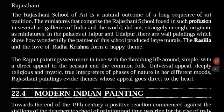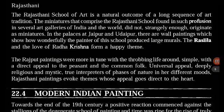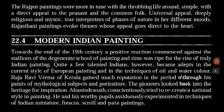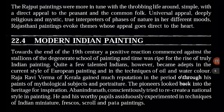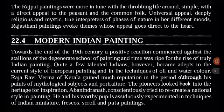The Rajasthani school of art is a natural outcome of a long sequence of art tradition. The miniatures that comprise the Rajasthani school, found in such profusion in several art galleries of India and the world, did not originally originate as miniatures. In the palaces at Jaipur and Udaipur there are wall paintings which show how wonderfully the painter of this school produced large murals. The Rasleela and the love of Radha-Krishna form a happy theme. The Rajput paintings were more in tune with the throbbing life around — simple, with a direct appeal to the peasant and the common folk, universal in appeal, deeply religious and mystic, true interpreters of the phases of nature in all different moods. Rajasthani paintings evoke themes whose appeal goes direct to the heart.